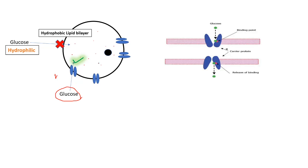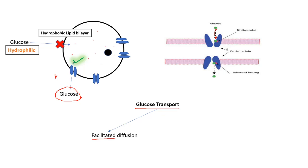These carrier proteins work by having a binding pocket where glucose binds. After binding, the carrier protein undergoes a series of conformational changes, resulting in the release of glucose inside the cell. This glucose transport can be either facilitated diffusion or active transport, which requires ATP.